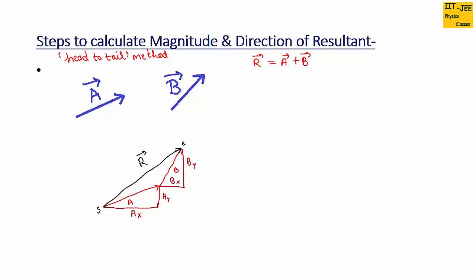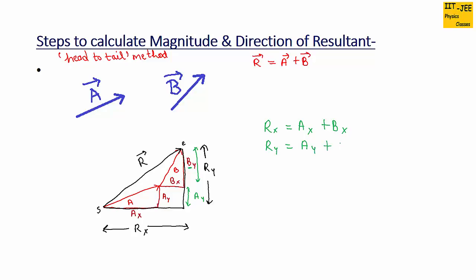Now let's consider the resultant vector r. The horizontal component of r is rx — this length here — and the vertical component is ry. You can see this length is ax and this length is bx, so rx equals ax plus bx. The same way, ry is the addition of ay and by, so ry equals ay plus by.